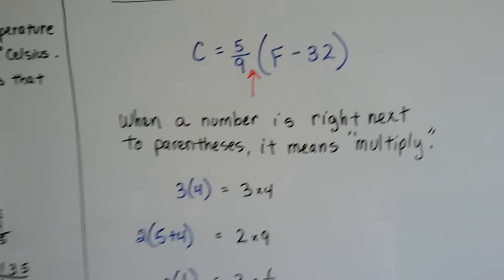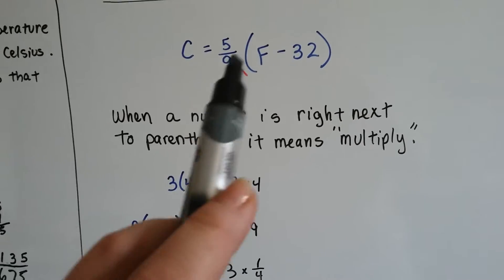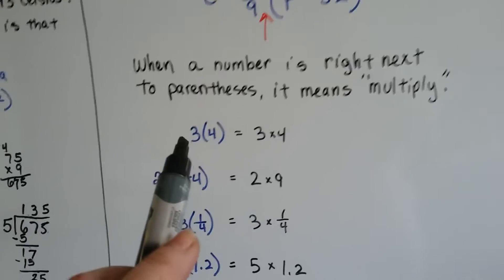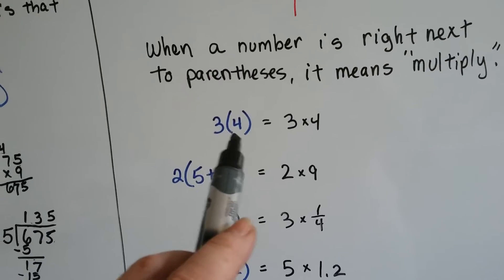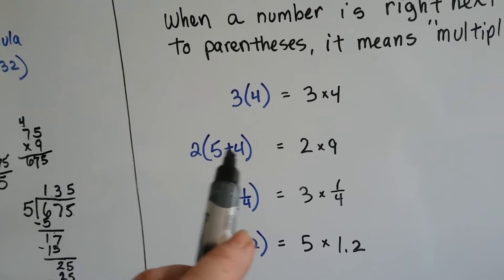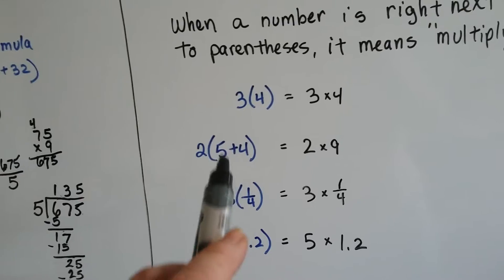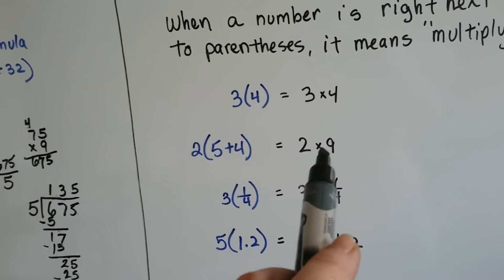So here's what I want you to remember. When a number is right next to parentheses, it means multiply. If you see a 3 next to a 4 like this, it just means 3 times 4. When you see 2 next to a parentheses and a 5 plus 4, order of operation says you do inside the parentheses first, but it means 2 times 9.